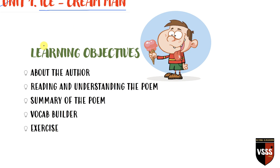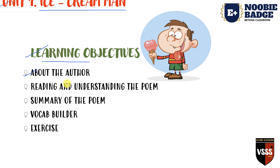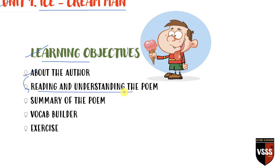To complete this poem, we will go through certain learning objectives. First, we have the about the author part — we will study about the author. Then we will move towards reading and understanding the poem, reading each word and understanding its meaning. Then we will move on to the summary of the poem, trying to summarize it in our own words. Then the vocab builder part, where we will learn the difficult words from the poem. And finally the exercise and question-answer part.